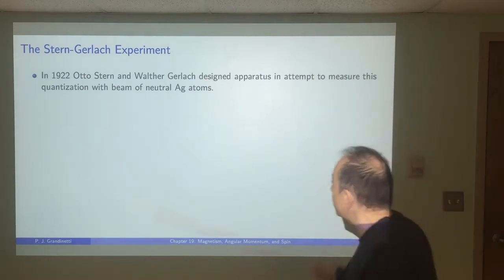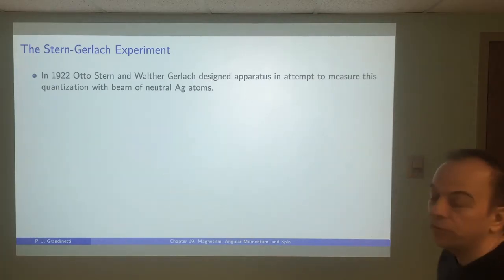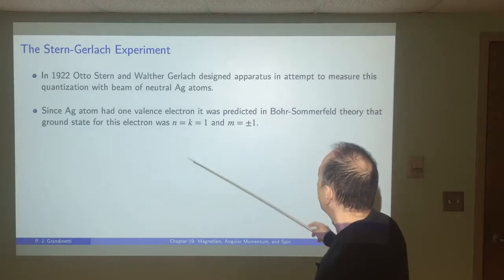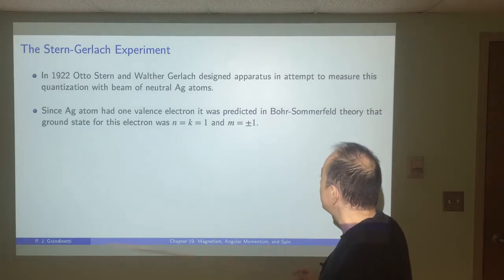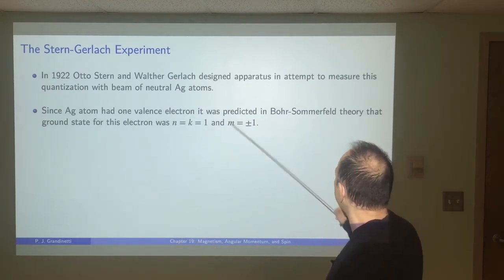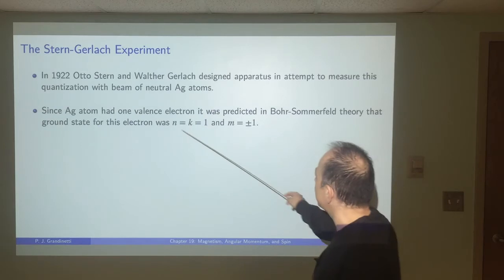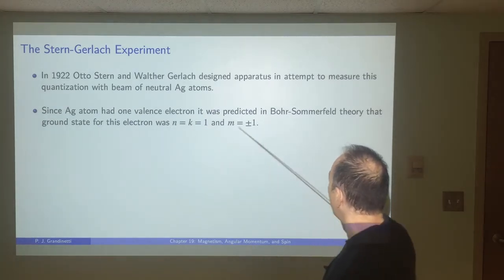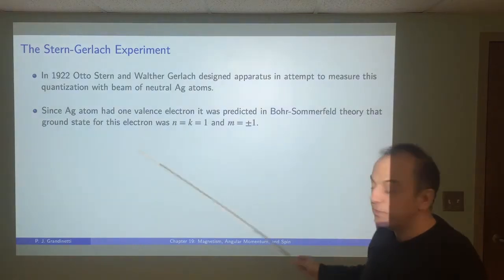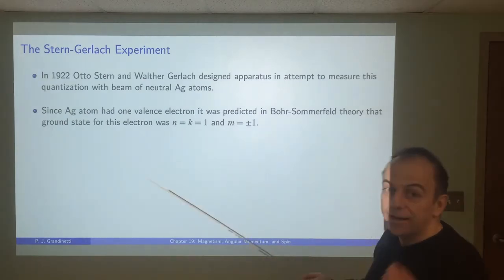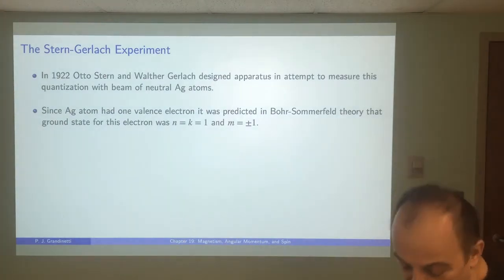This M described the quantization of the z component. So the M describes the quantization of the z component of the electron's orbital angular momentum. And with some refinement, Sommerfeld was able to take Bohr's model and show that he could explain the Zeeman effect by showing this effect of the orbital magnetic dipole moment on this M value, the magnetic quantum number.